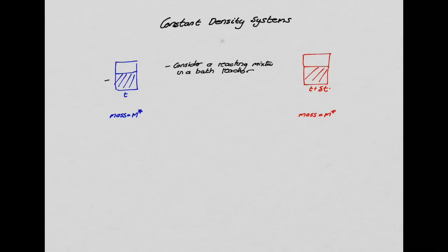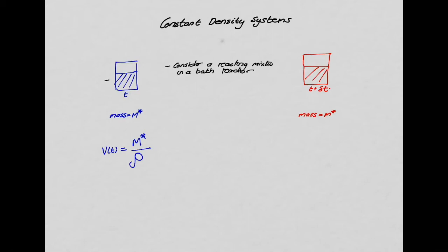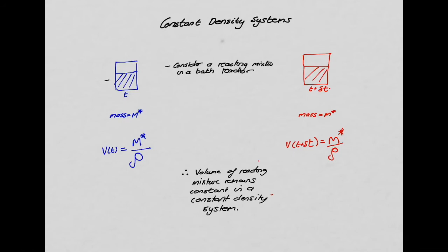What about the volume of the batch reactor? The volume is related to mass and density: volume equals mass divided by density. A little while later, the volume is again mass divided by density — the mass is the same and the density is the same, so the two volumes are equal. Therefore, the important result is that the volume of the reacting mixture remains constant in a constant density system.